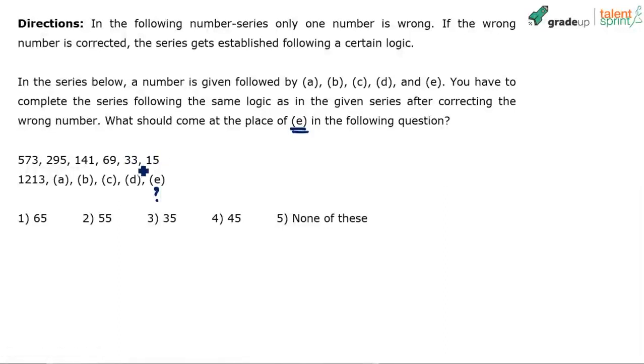If I actually look at the series from the reverse, it's like this: minus 3 divided by 2. 33 minus 3 is 30, divided by 2 is 15. Similarly, 69 minus 3 is 66, divided by 2. So the pattern is straight—it is minus 3 divided by 2.